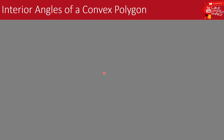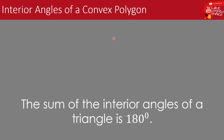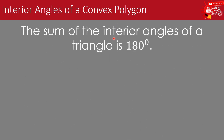We start with our discussion about interior angles of a convex polygon, beginning with the triangle. We all know that the sum of the interior angles of a triangle is 180 degrees. Take note that the sum of the interior angles of a triangle is 180 degrees.